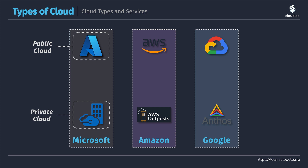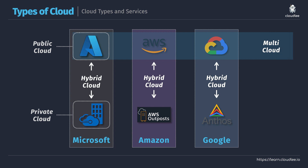Hybrid cloud is where you use a combination of both public and private cloud within your organization — using services like Azure Stack, AWS Outposts, or Anthos in conjunction with publicly available cloud solutions. Finally, multi-cloud is where we use two or more common public cloud providers within our organization. So we've now got a basic understanding of what cloud is, the key features and functionality it needs to provide, the different cloud service models, and the types of clouds we can get access to.